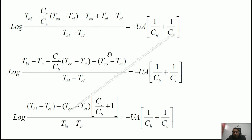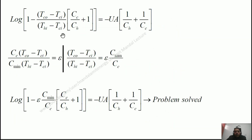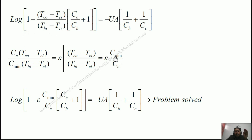Rearranging, we can separate out (T_HI minus T_CI) and factor out (T_CO minus T_CI). Taking (T_CO minus T_CI) outside the bracket leaves (C_C/C_H plus 1) inside. Taking the LCM, (T_HI minus T_CI) cancels, giving: 1 minus [(T_CO minus T_CI)/(T_HI minus T_CI)]·(C_C/C_H plus 1) equals minus U·A·(1/C_H plus 1/C_C). We know that C_C(T_CO minus T_CI) / [C_min(T_HI minus T_CI)] equals effectiveness epsilon, so (T_CO minus T_CI)/(T_HI minus T_CI) can be written as epsilon·C_min/C_C.